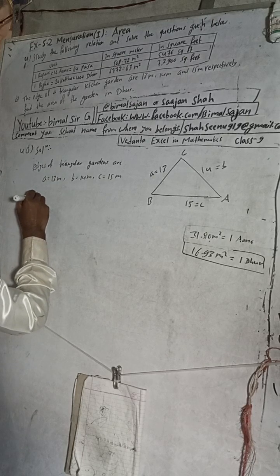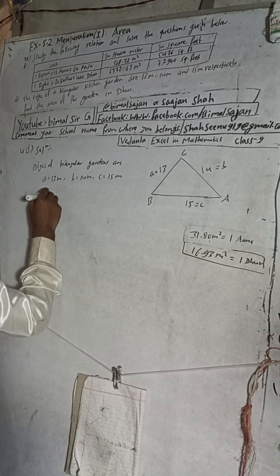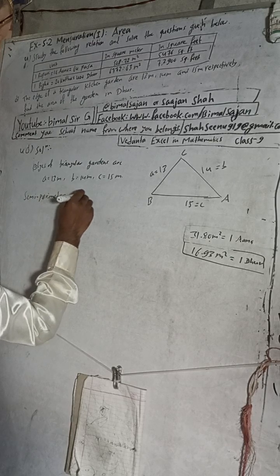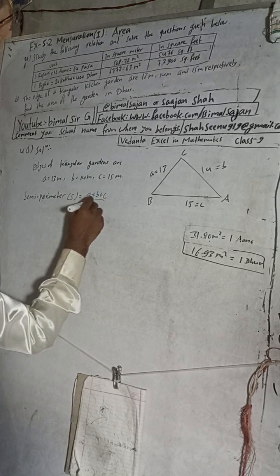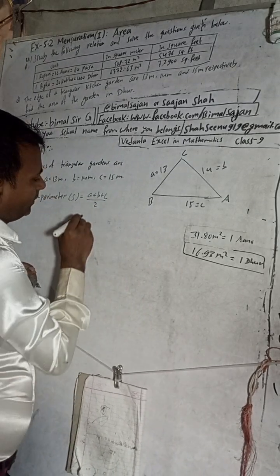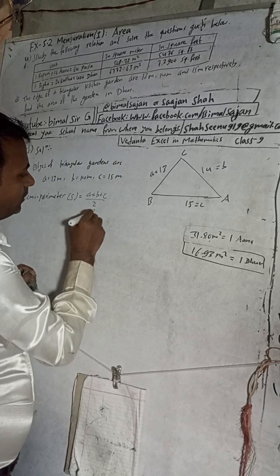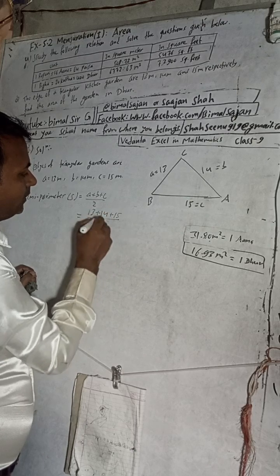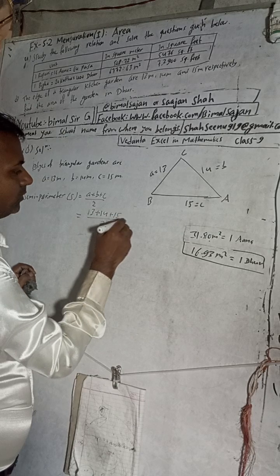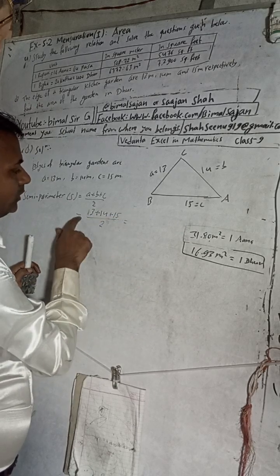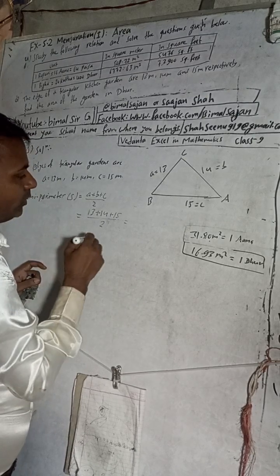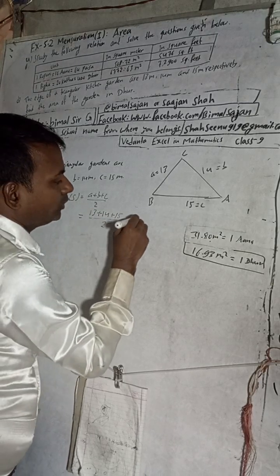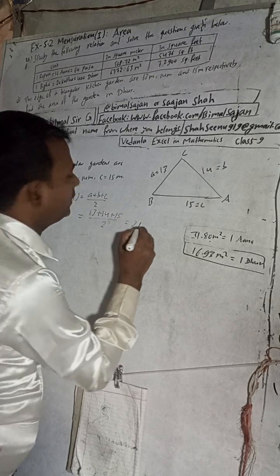Now, semi-perimeter: capital S is equal to a plus b plus c divided by 2. So that is 13 plus 14 plus 15 divided by 2. That gives us 42 divided by 2, which will be 21 meters.